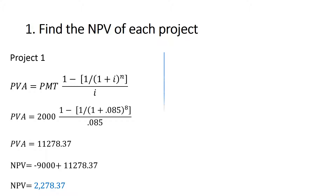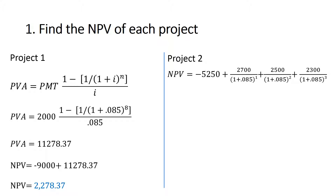For project two, we have different cash flows each year, so we use the regular present value equation, find all present values, and deduct the cash outflow. Using the net present value equation, the NPV for project two is $1,162.74.